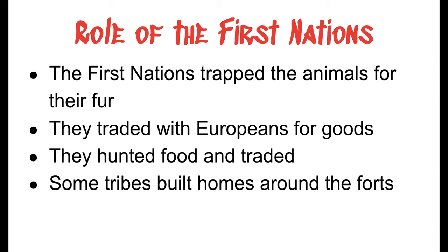What were the First Nations doing during this time? The First Nations were trapping the animals for their fur. They collected the furs and traded with the Europeans for goods. They hunted for food, and they traded. Some tribes built homes around the forts; others were more transient and would establish different trading camps, moving seasonally along with the beaver. Native Americans were trapping beaver in fall, summer, and winter, while Europeans were trapping primarily in fall.